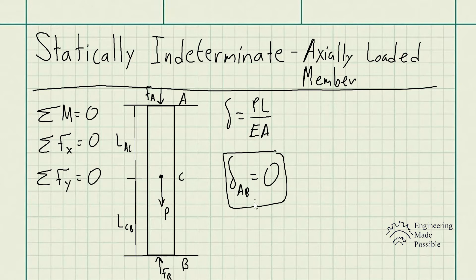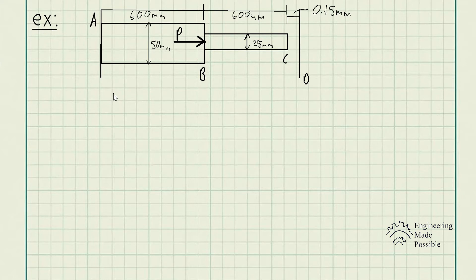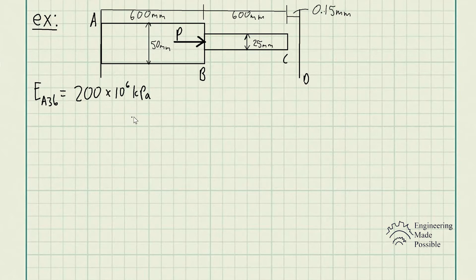Let's do an example to show the steps for solving problems like this. The problem statement is: if the gap between C and the rigid wall at D is initially 0.15 millimeters, determine the support reactions at A and D when the force P equal to 200 kilonewtons is applied. The assembly is made of A36 steel, so the modulus of elasticity is 200 gigapascals, or 200 times 10 to the 6 kilopascals.